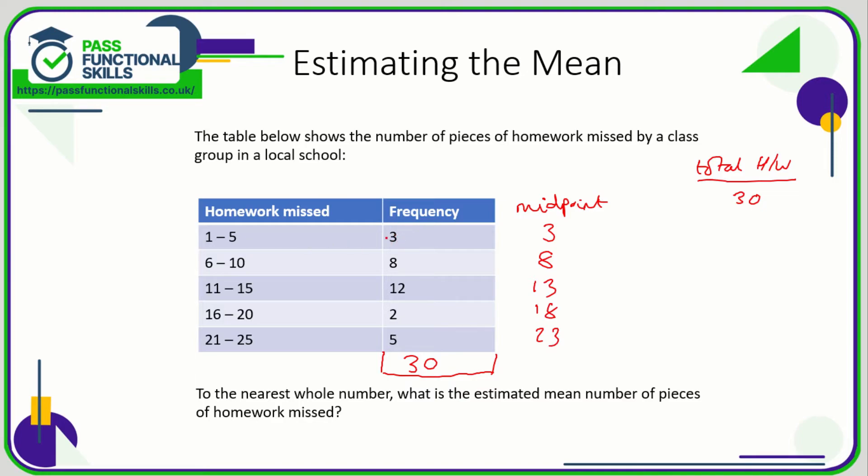So these three students, they missed between one and five. But we're assuming that they all hit exactly the midpoint, which was three bits of homework. If three students missed three bits of homework each, then the total for these three students will be nine bits of homework. So what we're doing is multiplying the frequencies by the midpoint. Eight times eight, sixty-four. This means that eight people missed eight bits of homework. We're assuming it's eight because it's just a guess, it's halfway between six and ten. Twelve people missed 13 bits of homework, we think. So 156.